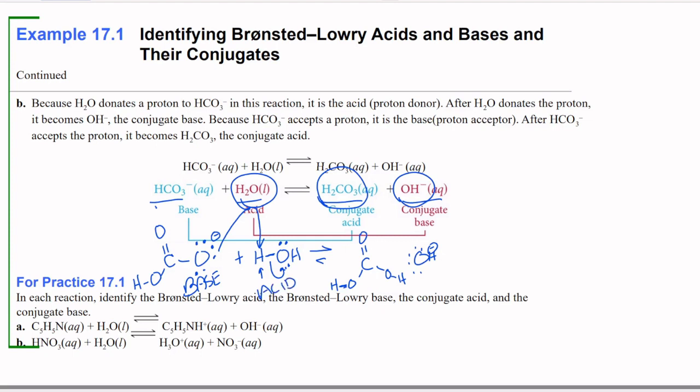And then we have carbonic acid, which is the conjugate acid of our base bicarbonate. And we have the hydroxide, which is the conjugate base of the acid, which is water. Remember, water is amphoteric and can act as both an acid and a base.